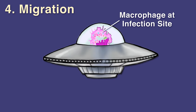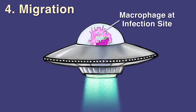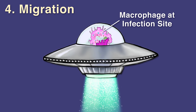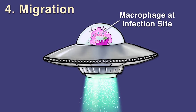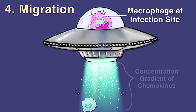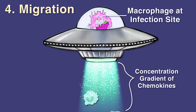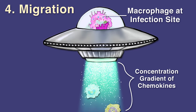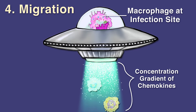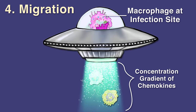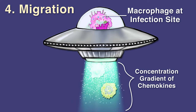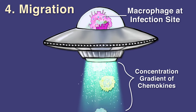Step 4: Migration. Migration of leukocytes through tissues occurs under the influence of chemokines produced at the site of infection. A concentration gradient of chemokines is formed, along which the leukocyte can migrate to the focus of infection.